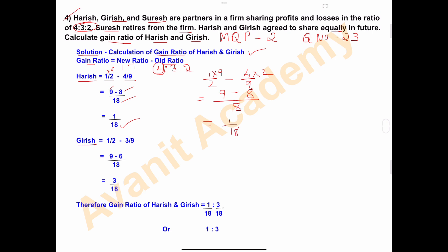Next is Girish. Girish's new ratio is the same, 1:1, which is 1 upon 2. Old ratio: 3 is the share of Girish, so 3 upon 9. The LCM of 2 and 9 is 18. 1 times 9 is 9, and 3 times 2 is 6. 9 minus 6 is 3, so 3 upon 18. Girish's gain ratio is 3 upon 18.